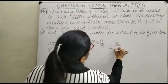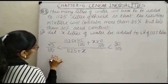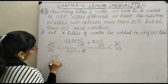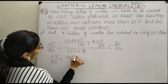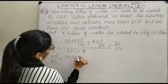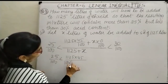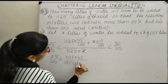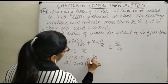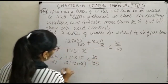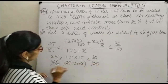So we set up the compound inequality: 25/100 is less than (1125 × 45) / (100 × (1125 + x)) is less than 30/100. The 100s cancel, giving us: 25 less than (1125 × 45) / (1125 + x) less than 30.